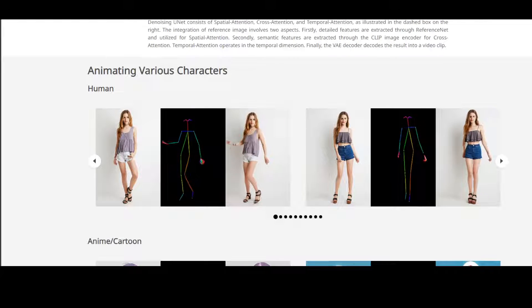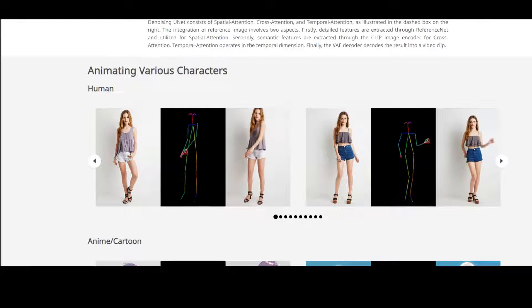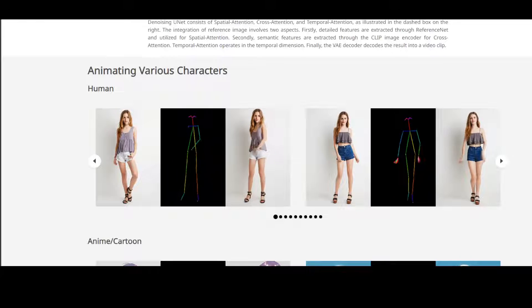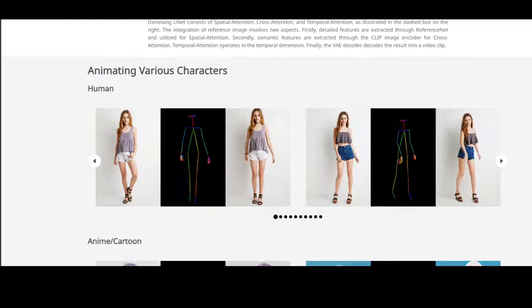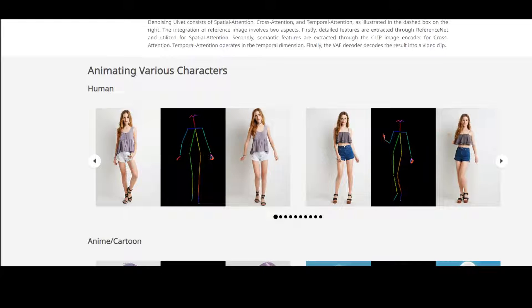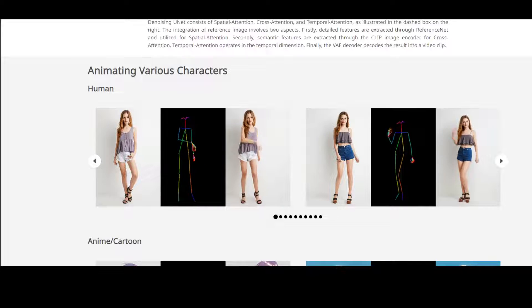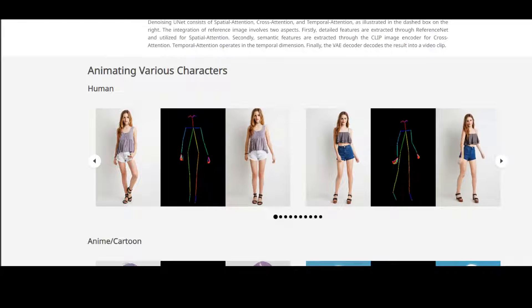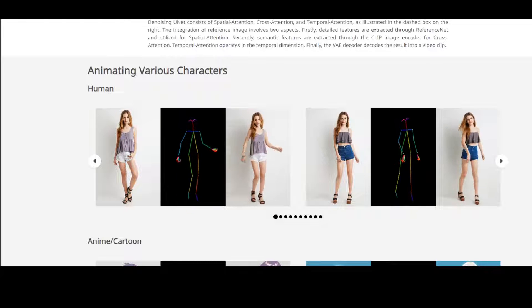In this new project, I am going to introduce you to a new technique or research called Animate Anyone with AI. Animate Anyone enables transforming still character images into animated videos controlled by desired pose sequences.